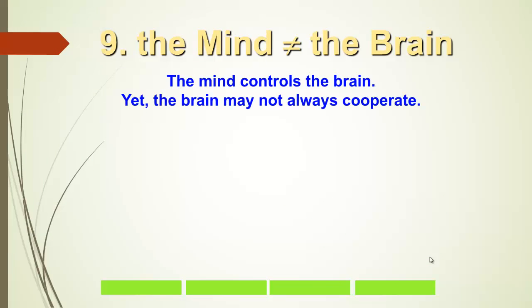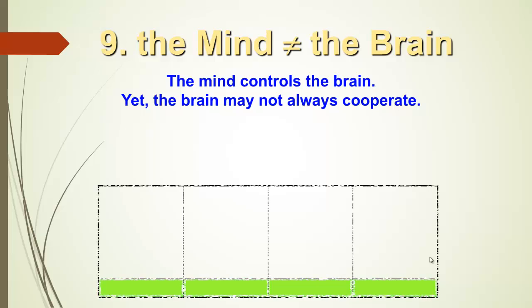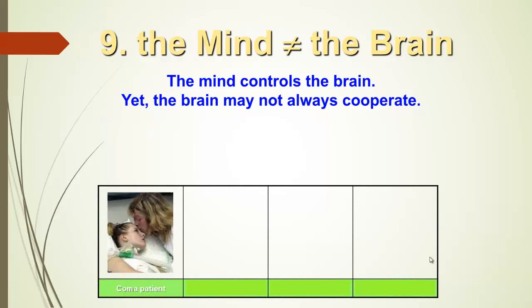The mind controls the brain. But, I agree, the brain may not always cooperate. There may be certain defects in the brain, so the mind cannot fully control the brain. Even a coma patient, the brain is somehow inhibited.